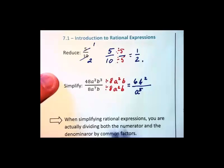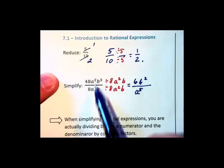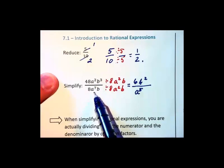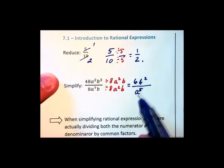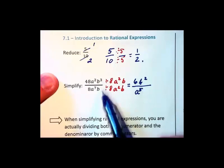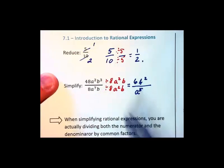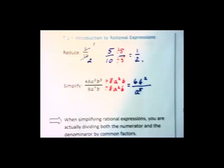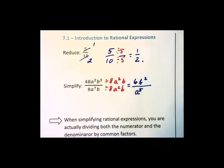Of course, that would have been a lot easier if we just said 48 divided by 8 is 6, noticing that there are more a's down in the denominator giving us a⁵, and then there are more b's up in the numerator giving us b². But I just wanted to talk about what we're really doing through this chapter.